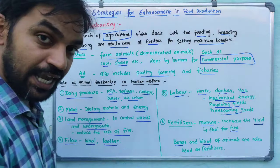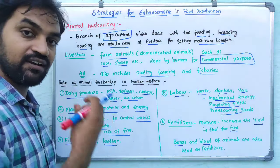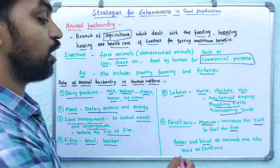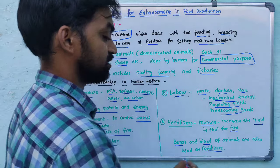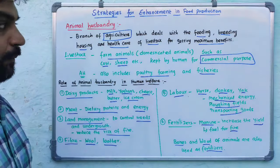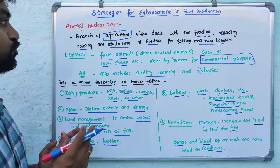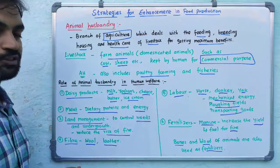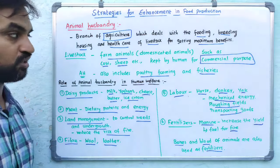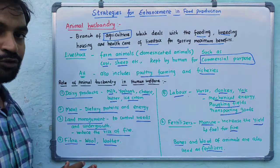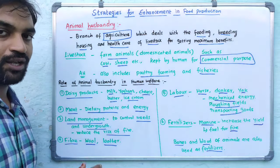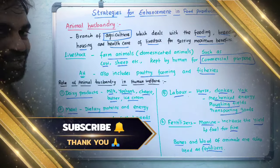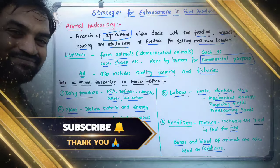Bones and blood are also useful products from animal husbandry. So these are all the things we should know about animal husbandry — this is the introduction. If you like this video, please like, share and comment, and subscribe to this channel. Thank you.